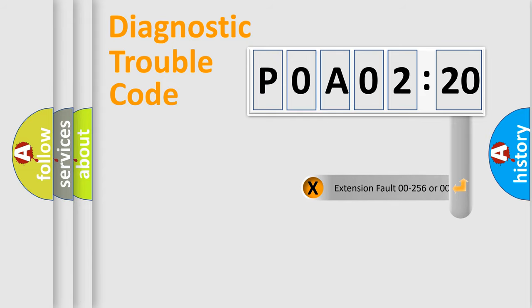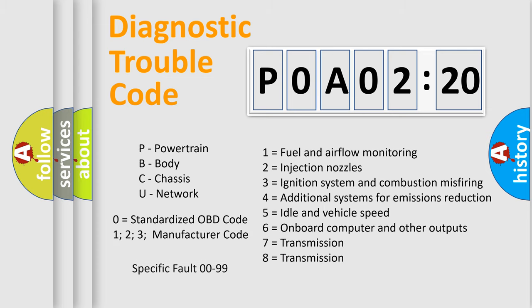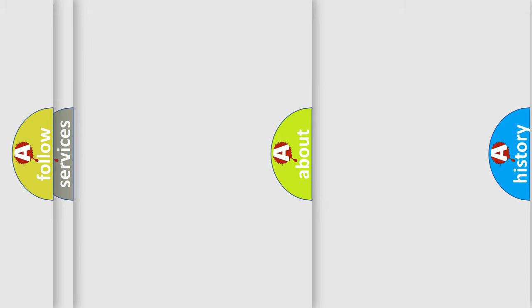The add-on to the error code serves to specify the status in more detail, for example, a short to ground. Let's not forget that such a division is valid only if the second character code is expressed by the number zero.